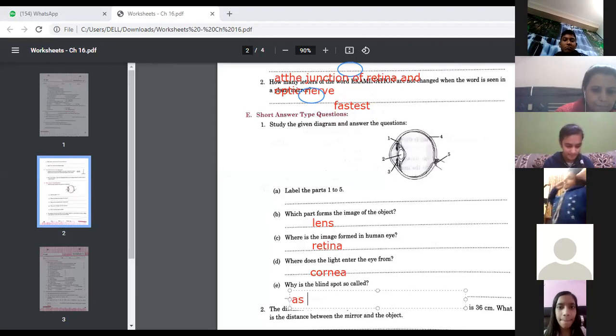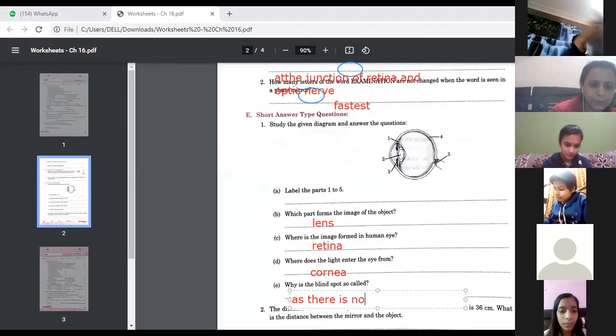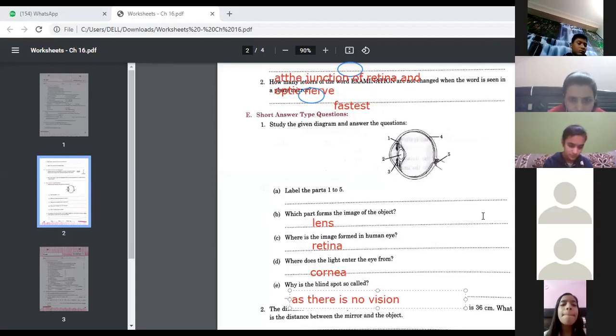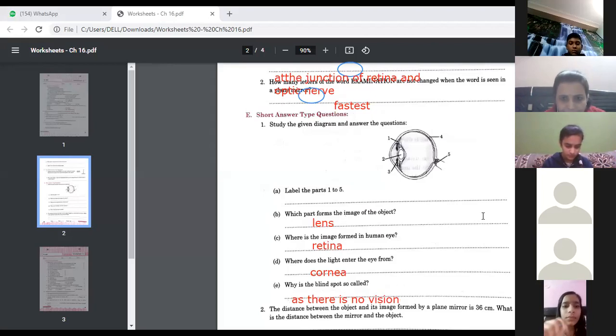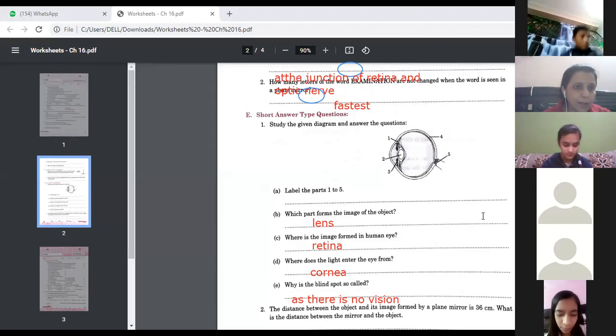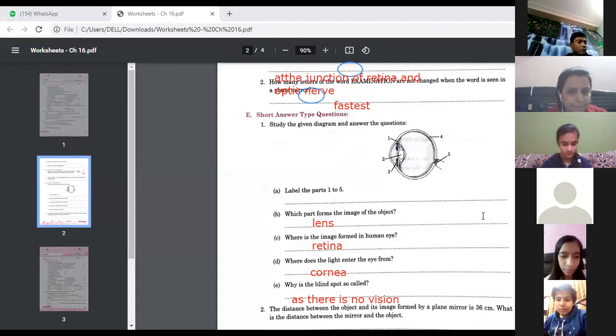Next is why is the blind spot so called? So what can you say? There is no vision of that area, no vision, no sensory cells are there. That's why the blind spot we called so. You may write down children, as there is no vision. As there is no vision.